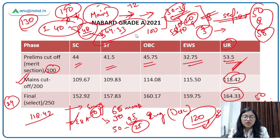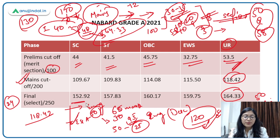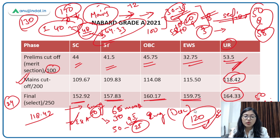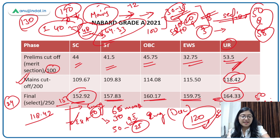So this was the cutoff for prelims, mains, and the final. Category-wise final cutoffs: for SC it was 152.92, for ST it was 157.83, for OBC it was 160.17, and for Economically Weaker Section it was 159.75. There is very little gap — SC is around 153 and the unreserved is 164, so hardly a 10-mark difference.